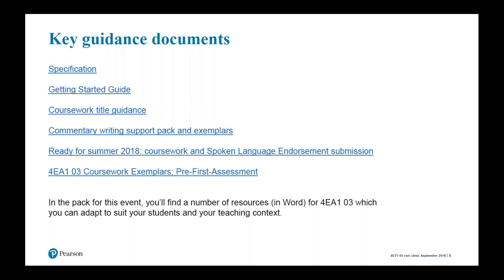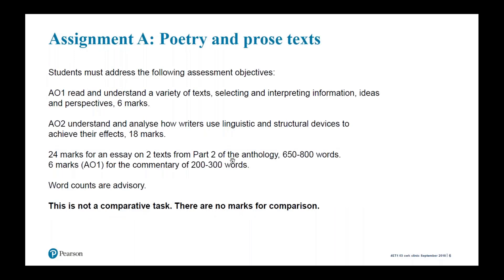So I was just talking through the key guidance documents that are available, and then talking through the requirements of Assignment A, highlighting that on the main essay it's six marks for AO1 and 18 for AO2. The focus should be much more heavily on analyzing linguistic and structural devices and their effects, mentioning the two word counts: 650 to 800 for the essay on two texts from part two of the anthology, and just six marks for the commentary which should be about 200 to 300 words. There are no marks for comparison, so you need to think about that when you set the title.